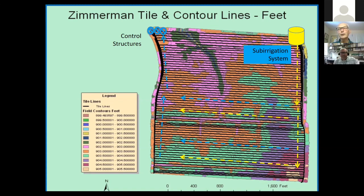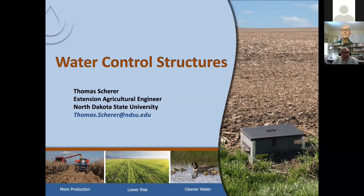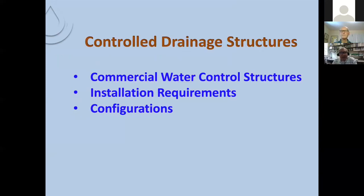However, sub-irrigation typically requires narrower row spacing or spacing between tile lines compared with drainage, so it is not the most efficient way for sub-irrigation but for drainage it is the right dimensions. So those are some of the agronomic aspects. Now we're looking more at the design factors of the tile boxes — I want to talk about the actual water control structures and look at some of the commercial water control structures that are out there, a little bit of the installation requirements, and then some other configurations that you may or may not want to pursue.